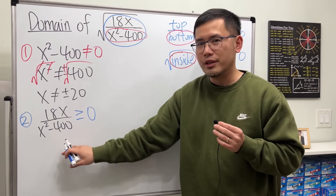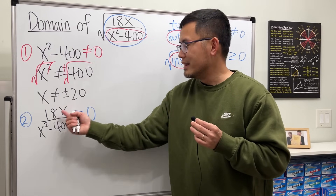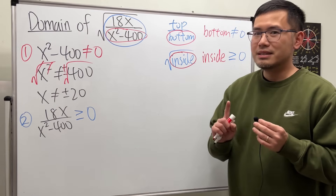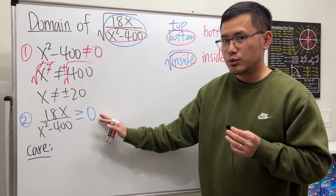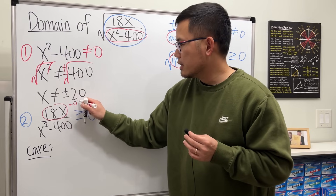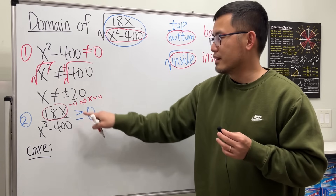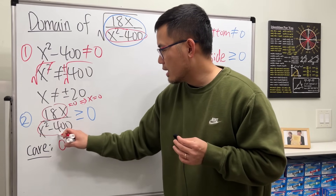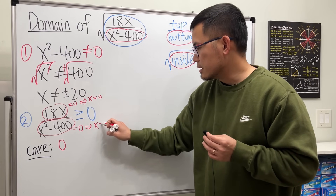This rational inequality is not easy to solve — do not just multiply both sides by the denominator. Instead, find the critical numbers. The right-hand side is already zero, so set the numerator equal to zero: 18x = 0 implies x = 0. Then set the denominator equal to zero: x squared minus 400 = 0 gives x = plus or minus 20.